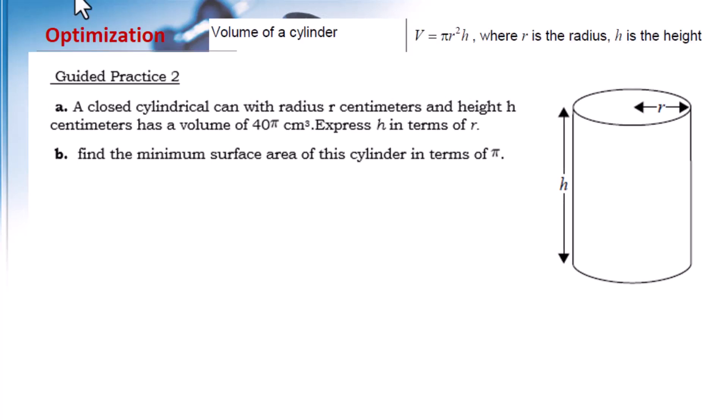Volume of a cylinder formula is given in the formula chart. Volume equals πr² times height. In this question, volume is given: 40π equals πr² times height.